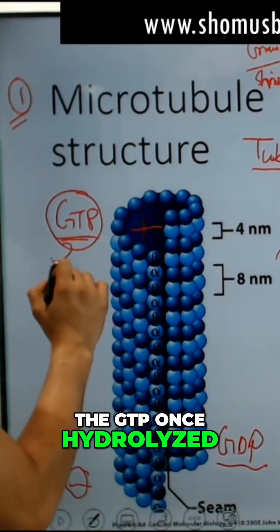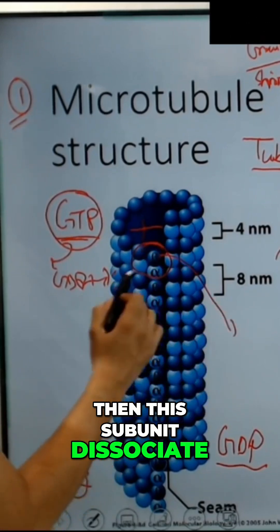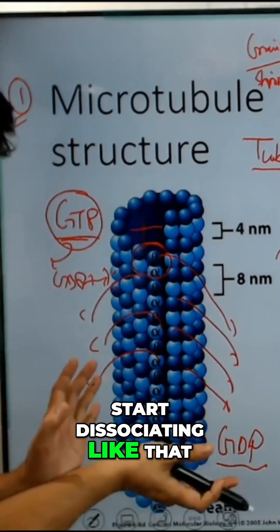Here, when GTP is hydrolyzed to GDP and PI, the subunits dissociate, peeling off and starting to dissociate from the structure.